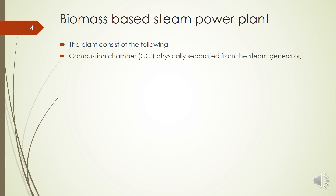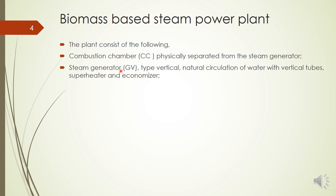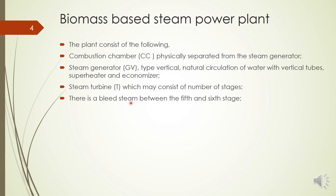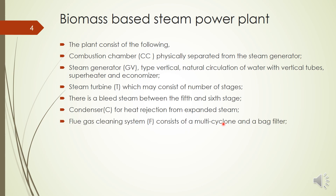The plant consists of a combustion chamber, which is separated from the steam generator. The steam generator is typically a vertical natural circulation boiler with a superheater, economizer, and other accessories and mountings. The steam turbine consists of a number of stages — normally expansion takes place in more than one stage for better performance. Steam is bled between the fifth and sixth stage — if there are ten stages, steam is bled mid-way and mixed with the feed water. A condenser is used for rejection of heat.